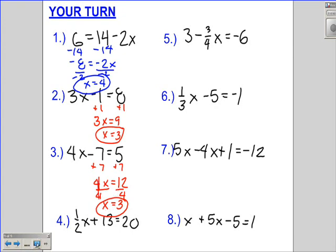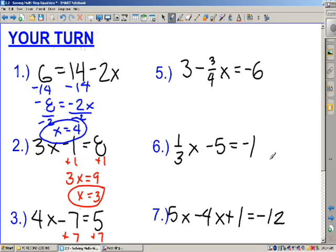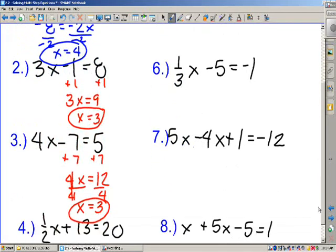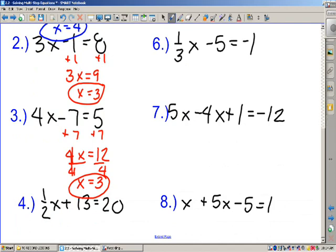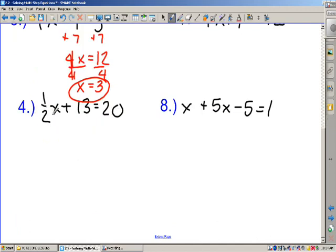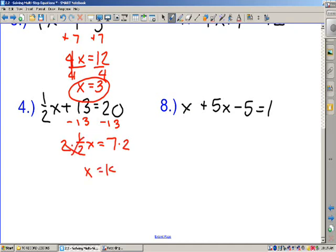Let me open this up a little bit so we have more room. Looking at number 4, I'm going to subtract that 13 from both sides, so 1 half of x equals 7. Half of what number is 7? I'm going to multiply both sides by 2, that reciprocal of 1 half. So x equals 14.